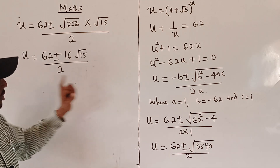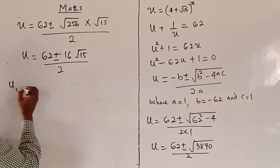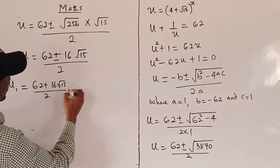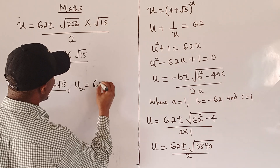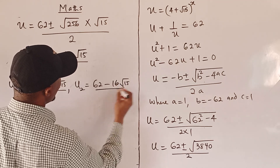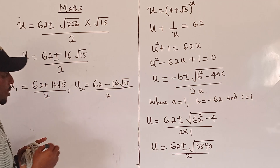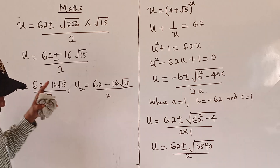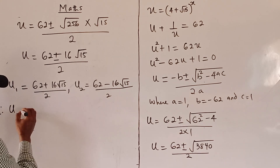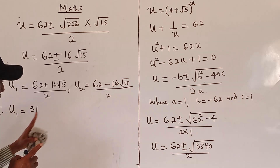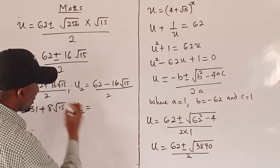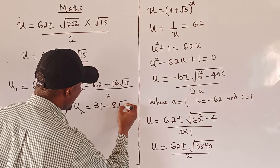There are going to be two answers, u₁ and u₂. u₁ = (62 + 16√15) / 2 = 31 + 8√15, and u₂ = (62 − 16√15) / 2 = 31 − 8√15. But we made a substitution, so we recall that u = (4 + √15)^x. Because we have two answers for u, we are going to have two cases.